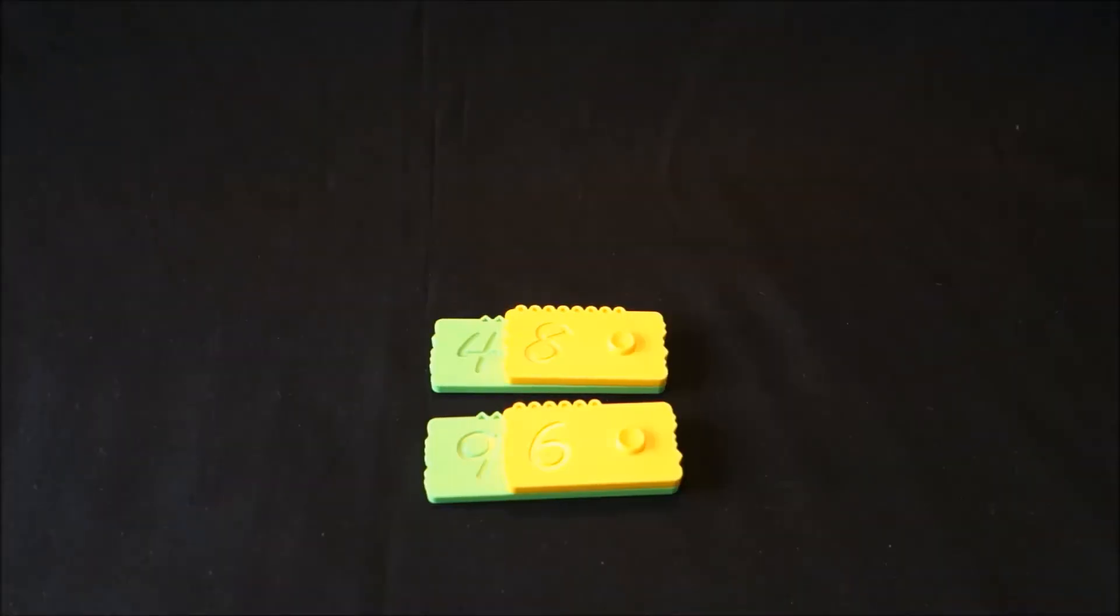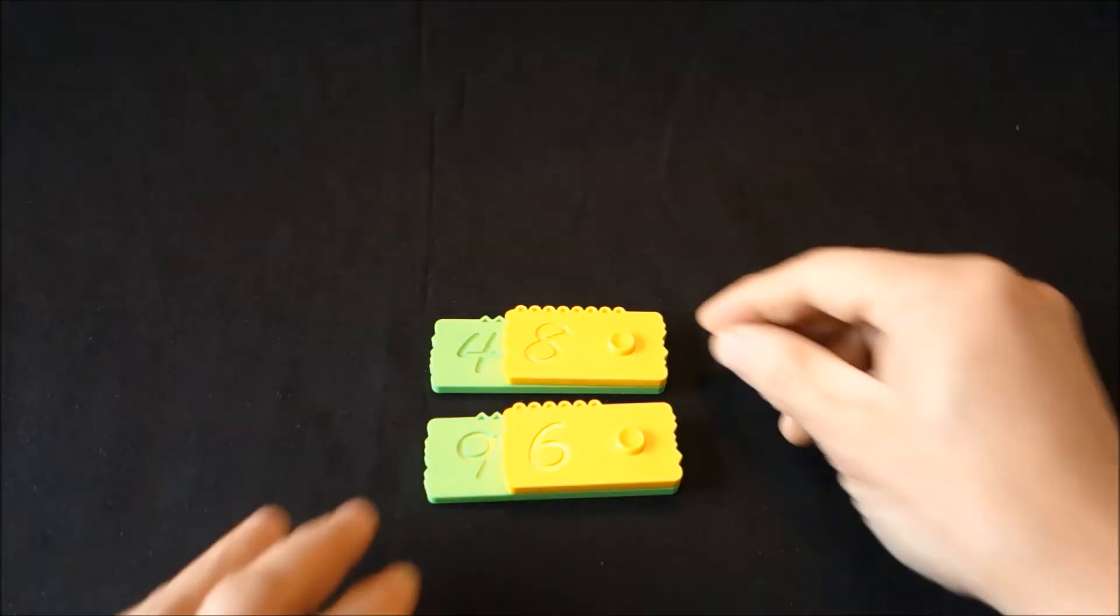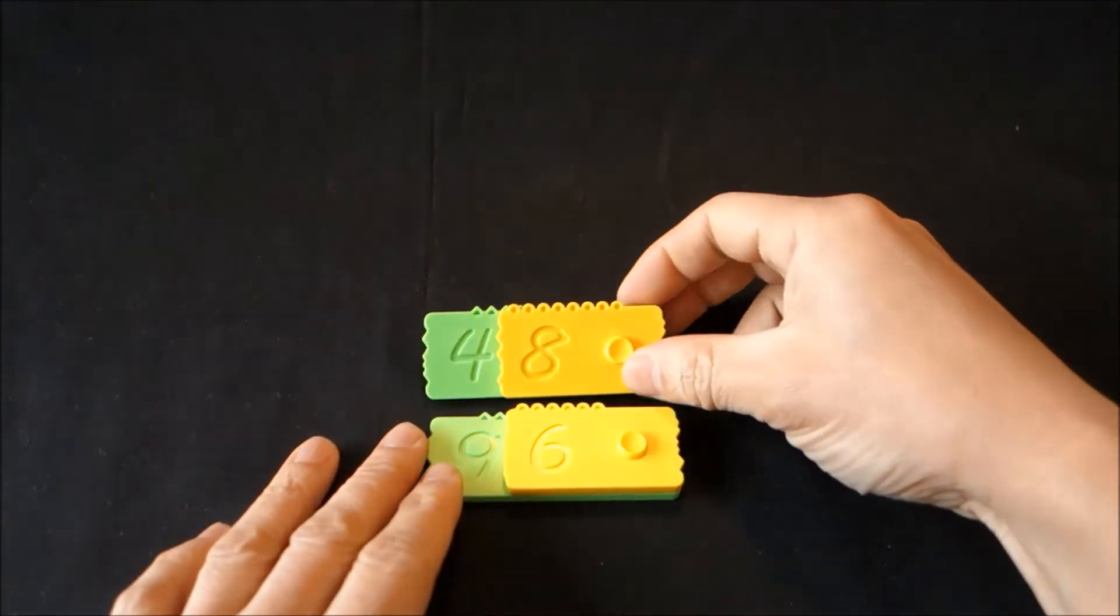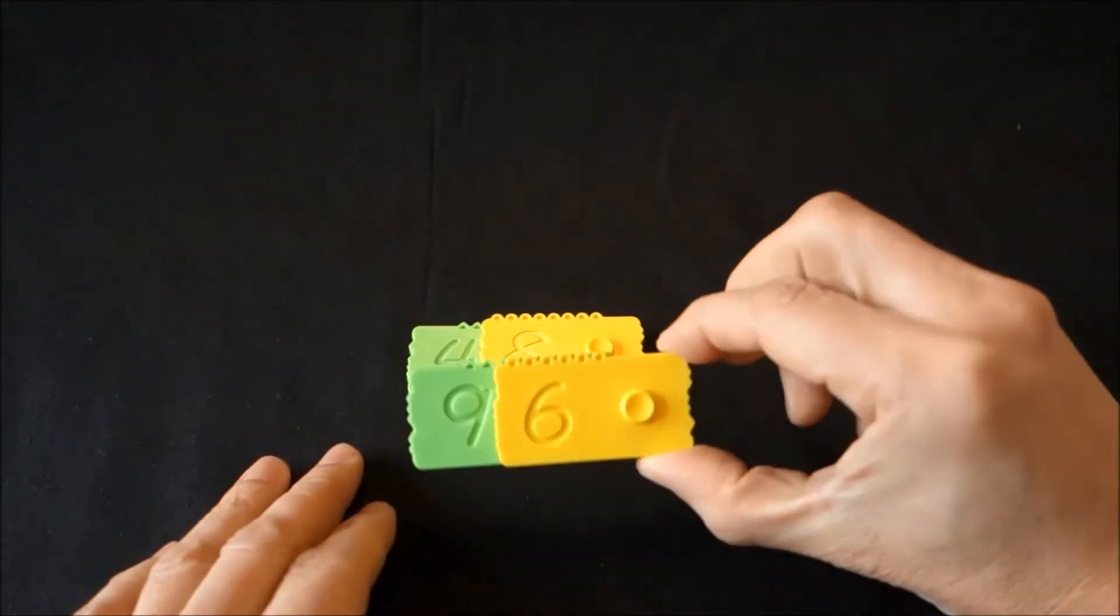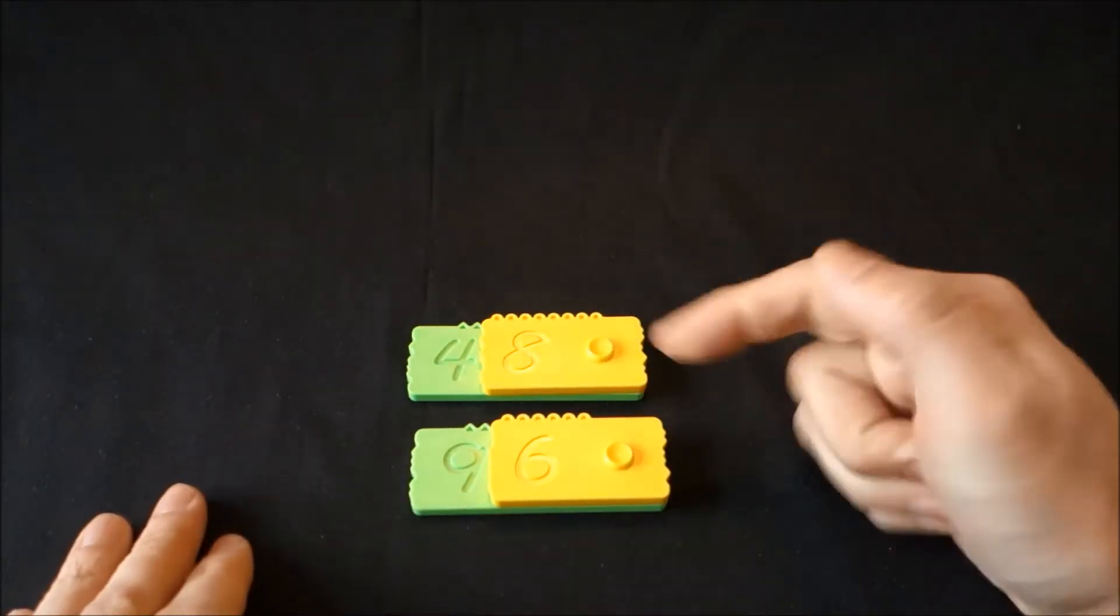This exercise is Classical Edition. For this, we have built two numbers: one is 48 and the other one is 96. Let's see how we can start adding these.